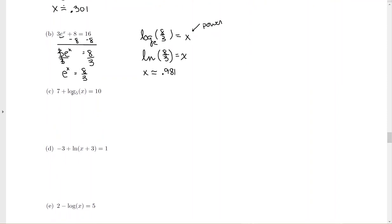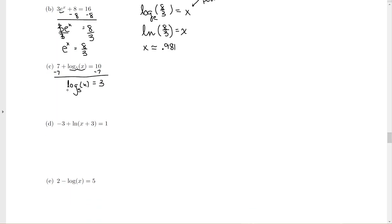For letter c, again, now we're solving for the logarithm, so I need to get rid of the number 7. It's a positive 7, so subtract 7 from both sides of the equals. So I have log base 5 of x equals 3. Now I want to get rid of the word log, so I'm going to bring down the base to the power equals x, or 5 cubed. 5 times 5 times 5 will give you 125. So our exact answer and our approximation are the same, 125.